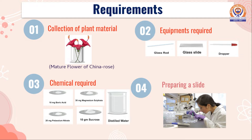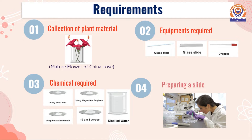Next are the requirements. For this experiment, a mature flower of China rose is collected. The equipment required are a glass rod, glass slide, and dropper. Chemical requirements include boric acid, magnesium sulphate, potassium nitrate, sucrose, and distilled water.